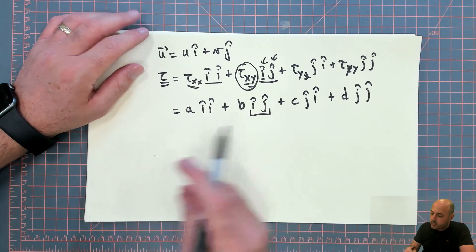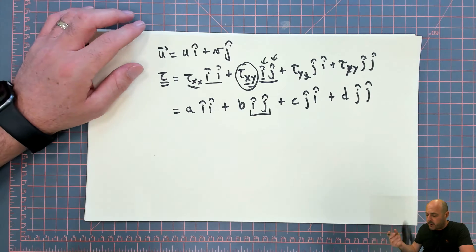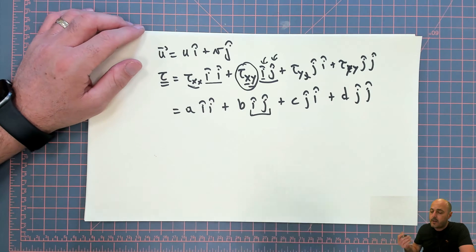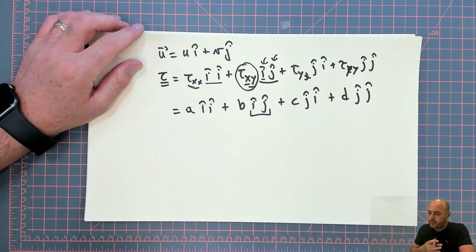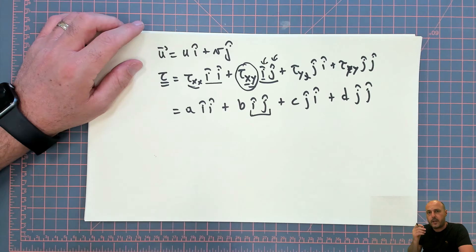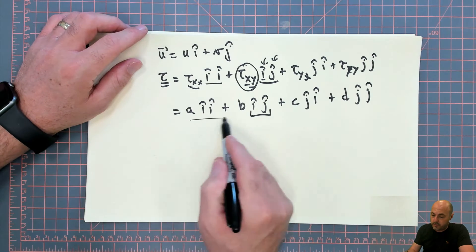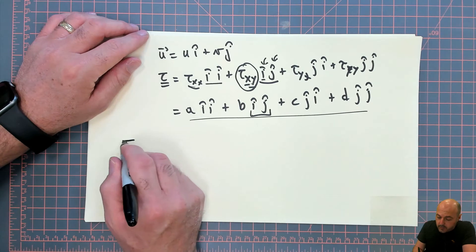Now, once you write, once you accept that you can write a tensor like this, then it's a very easy thing to treat divergence operations on the tensor as simply just distributive dot products. So if you treat the Nabla operator as a vector and then you treat the tensor with this dyadic notation, then you could do some really cool things.